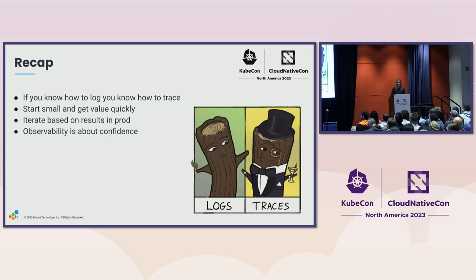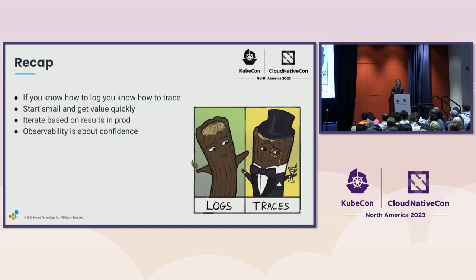As a recap: the biggest thing to take away is that if you know how to log, you know how to trace. Whether you're logging to your console, terminal, or logs being sent to a log destination, we have these different forms of logs but we want to put them in a way that makes sense, lets us correlate from A to B to C, and get additional information. We want to start small and get value quickly — especially if our teams are nervous, if this feels like a big bang change. I wouldn't recommend doing that; you're going to have a lot of pushback from developers, management, maybe yourself. By starting small with automatic instrumentation, you can get a lot of value out of the box and get a feel for how things are looking, then dig in to add more detail where you need it.